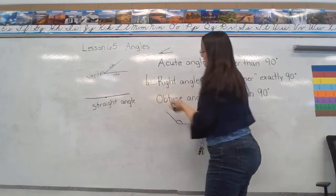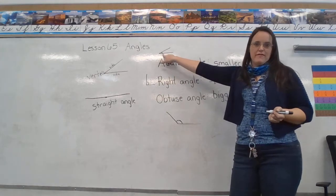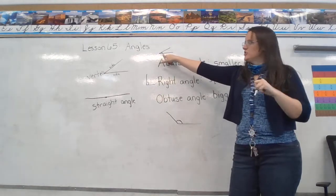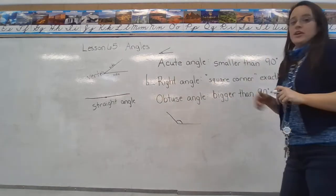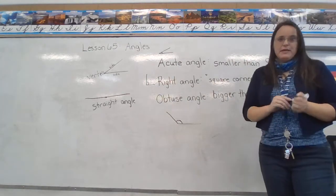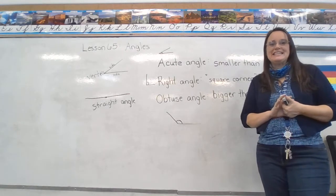We mark the right angle by drawing the box in the corner, whereas these we don't have a box. We just make a little line to show that that's the angle we're talking about. So what you're going to need to be able to do today is look at an angle and name it.